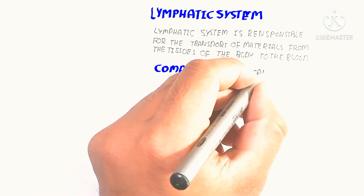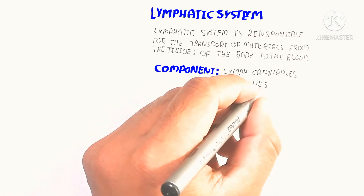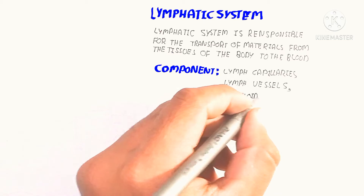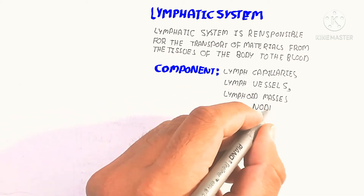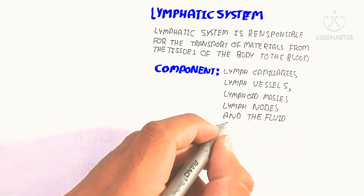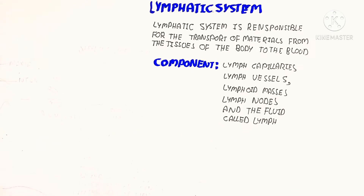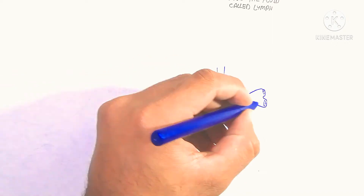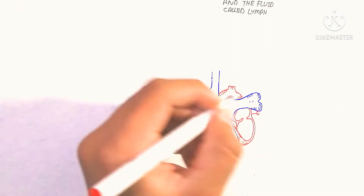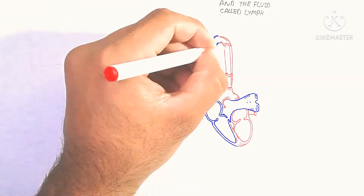The immune system also depends on the lymphatic system, which stores immune cells and educates them in the lymph nodes. The lymphatic system is made up of lymph, lymph capillaries — which are single-cell-containing vessels — lymph vessels similar to those in the circulatory system, lymphoid masses, lymph nodes, and the fluid called lymph. The next video will cover immunology of the lymphatic system in detail.